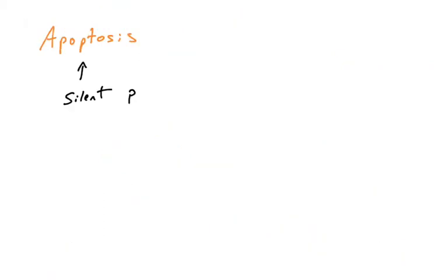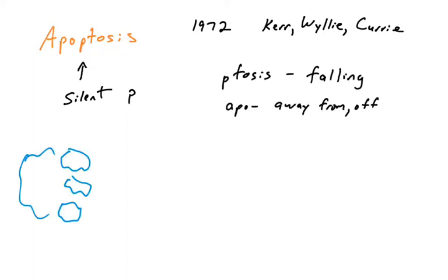The last thing we're going to talk about here is the pronunciation of the word apoptosis. I am pronouncing it correctly with the silent P. Many people will call it apoptosis, but if you go back to the origins of the term — the 1972 paper by Kerr, Wiley, and Currie — they coined this term with the help of a Greek language professor to describe what they saw under the microscope: a cell undergoing a process whereby pieces were falling away from it, almost like leaves falling off a tree or petals falling off a flower.